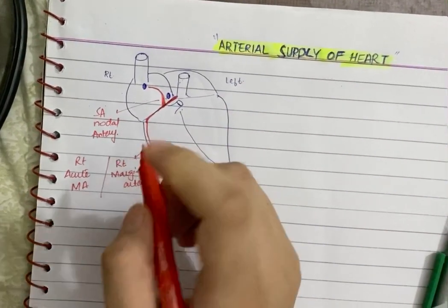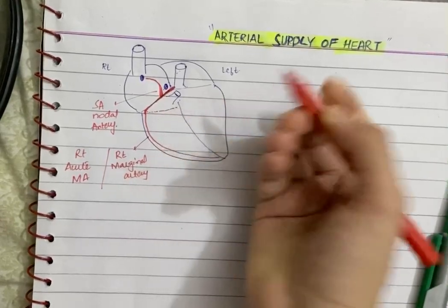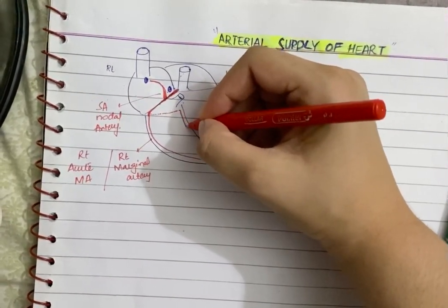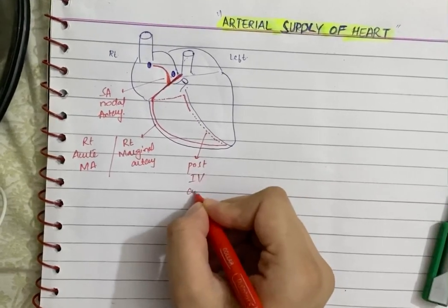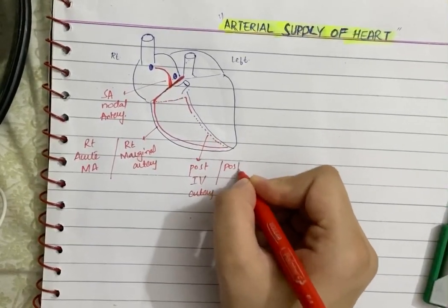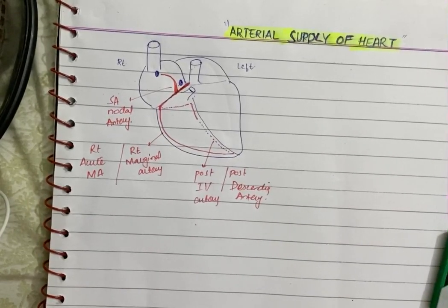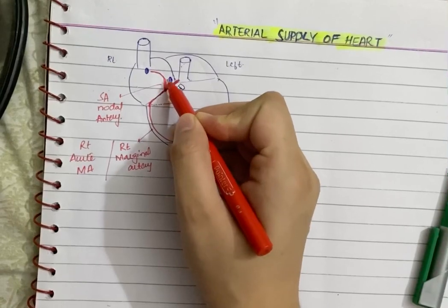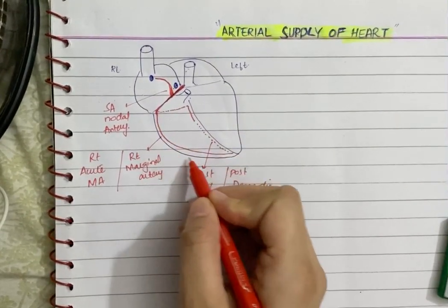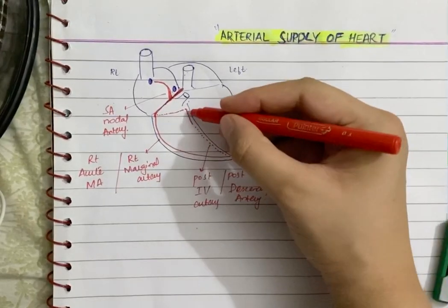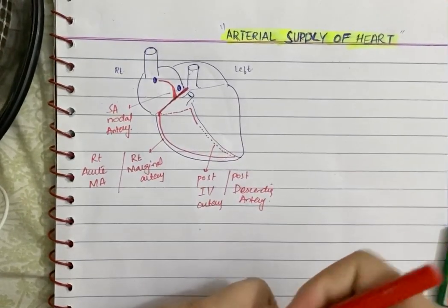The right coronary artery then curves around the posterior coronary sulcus — shown by the dotted line — and gives off its third branch, which is the posterior interventricular artery, also called the posterior descending artery. To repeat: the right coronary artery originates from the aorta, gives off its first branch moving up — the SA nodal artery — its second branch the right marginal artery, and curves behind the posterior coronary sulcus to give off its last branch, the posterior interventricular artery.